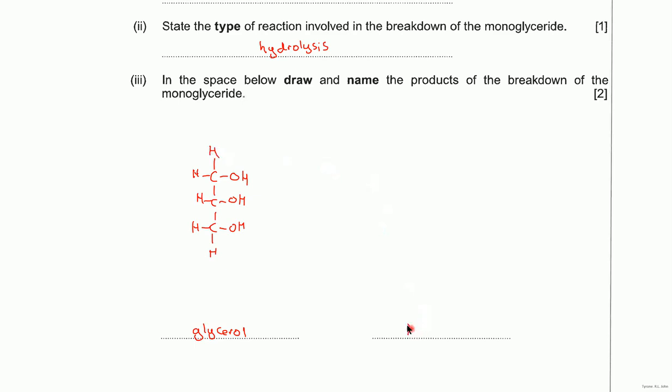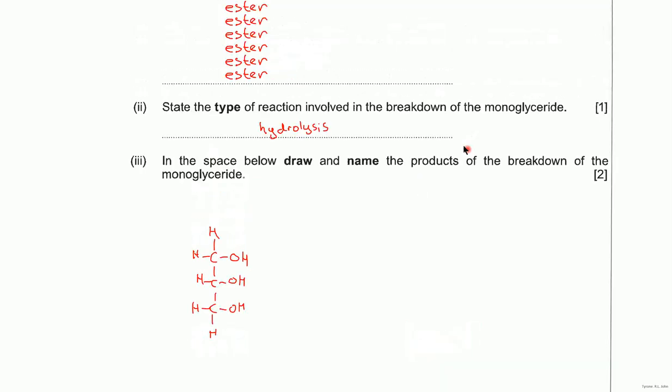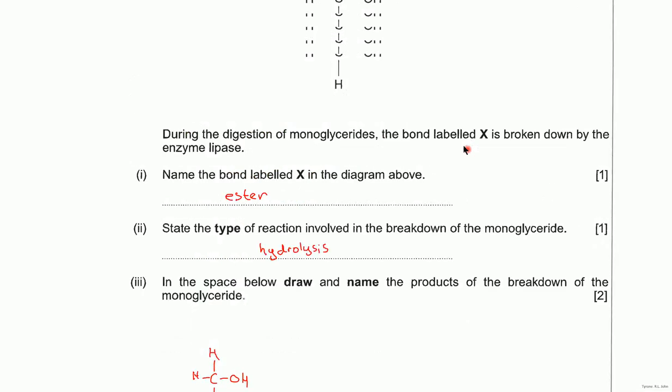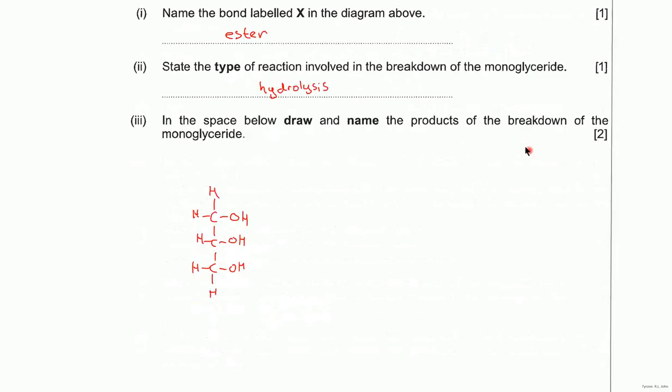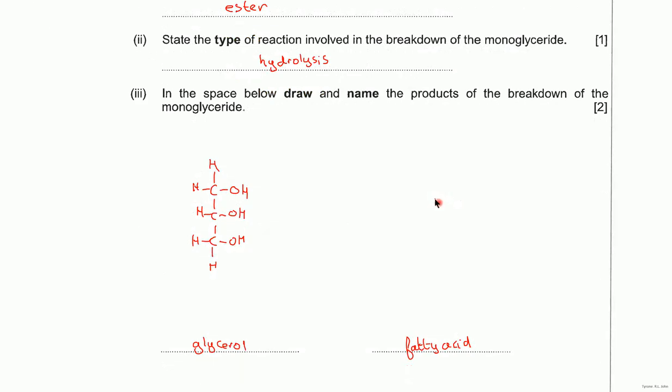The next one is fatty acid. Now in the diagram, it shows the fatty acid as a zigzag line. So, that's going to be the hydrocarbon chain. You can draw it like that because that's what the examiner has used. But you must put the carboxyl group or the carboxylic acid group in it. There you go. So, that will get you two marks.